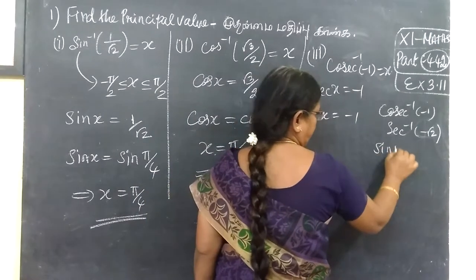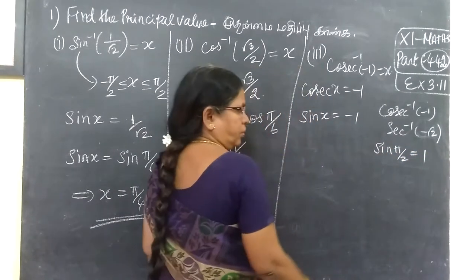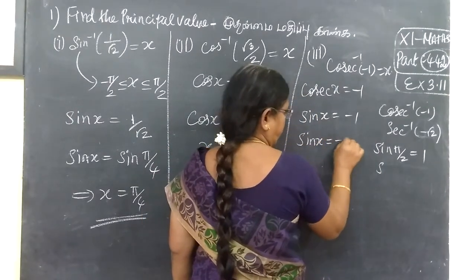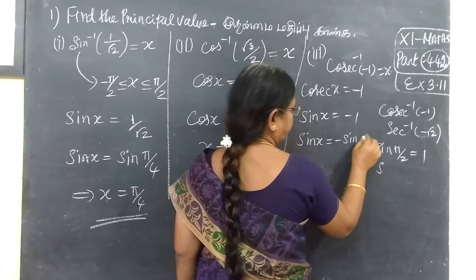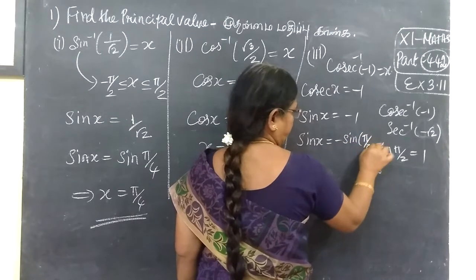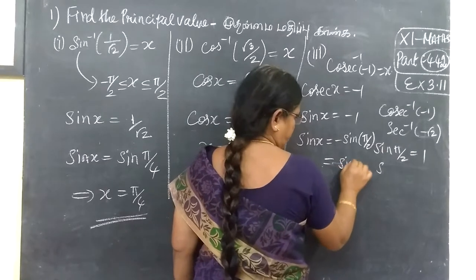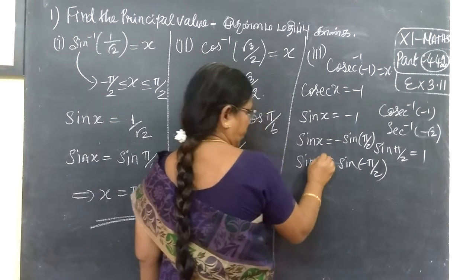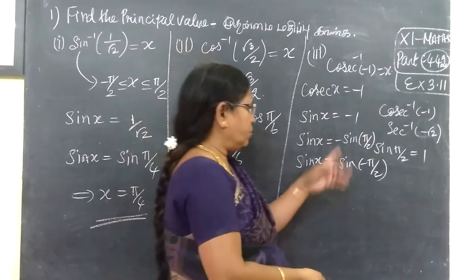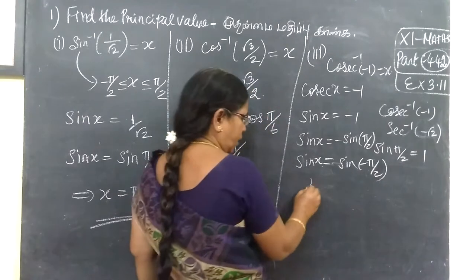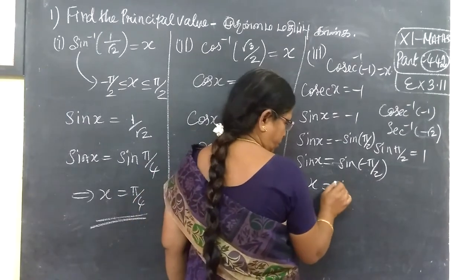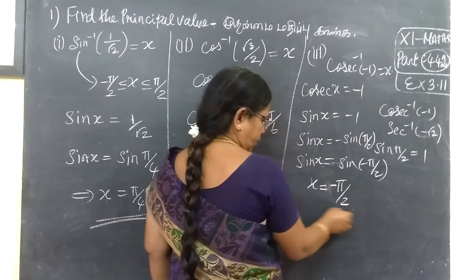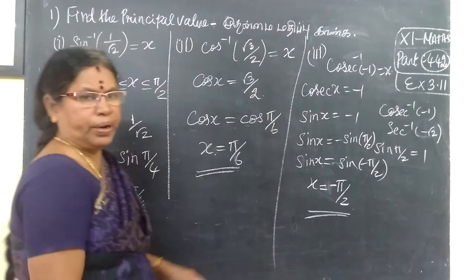We know sin 90° is equal to 1. Therefore this is the third one. This is equal to π/2 minus 1 equal to 1. So sin of minus π/2 — this is minus 1. So sin cancels, and the principal value is minus π/2. So x is equal to minus π/2.